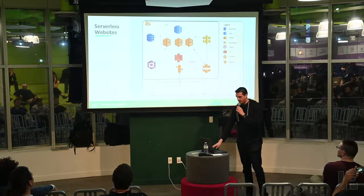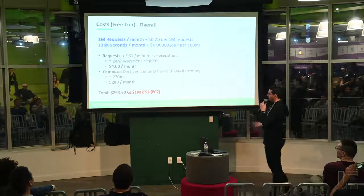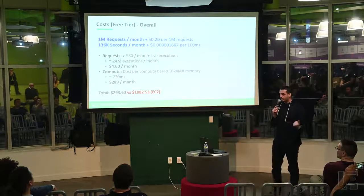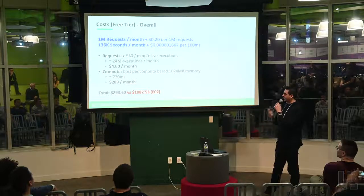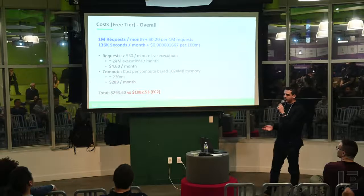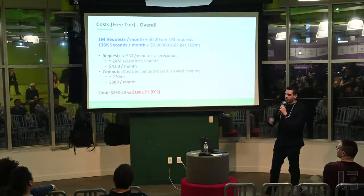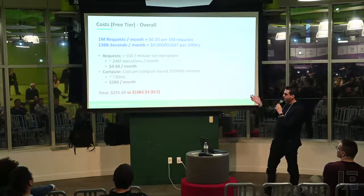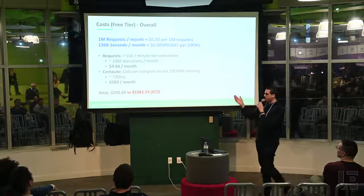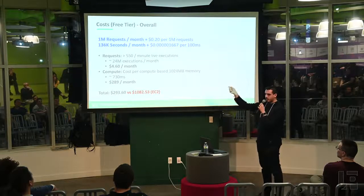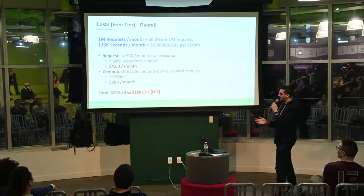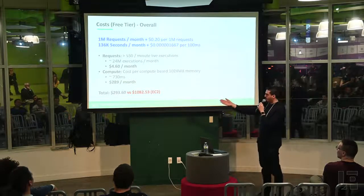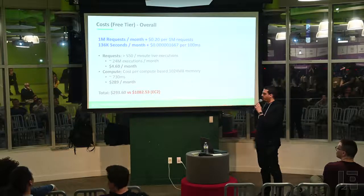So what does this cost? These are actual monthly bills. We compared it to what we had set up with an EC2 instance. We do over 550 Lambda executions per minute — that's API requests, bulk jobs, scheduled jobs — about 24 million executions a month, amounting to 460 million requests. Broken down by compute, we use a gigabyte-second per each; the average comes up to about 700 milliseconds. All in all, we end up paying just under $300 versus the alternative of almost $100.